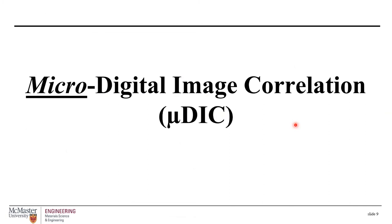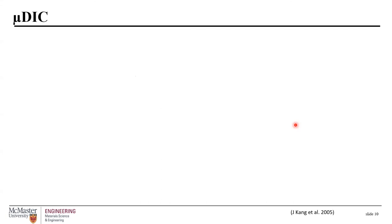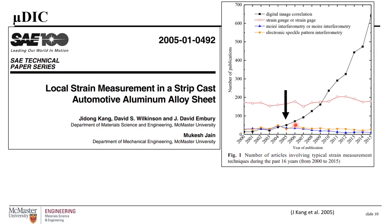The concept of looking at strain partitioning at the microscale was first introduced by Dr. Wilkinson's group. Dr. Zhidong Kang was the primary author of the key publication, first released in 2005 on an automotive aluminum alloy sheet. After 2005, the number of publications using the DIC technique exponentially increased.